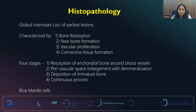Looking at histopathology, globuli interossei are the loci of the earliest lesions. It is characterized by bone resorption, new bone formation by osteoblasts, vascular proliferation, and connective tissue formation. That is why those red hues we keep talking about in otosclerosis are also seen. These can be divided into four stages: first, resorption of enchondral bone around the blood vessels; then perivascular space enlargement leading to enzymatic action and demineralization; then deposition of immature bone; and finally sclerosis.